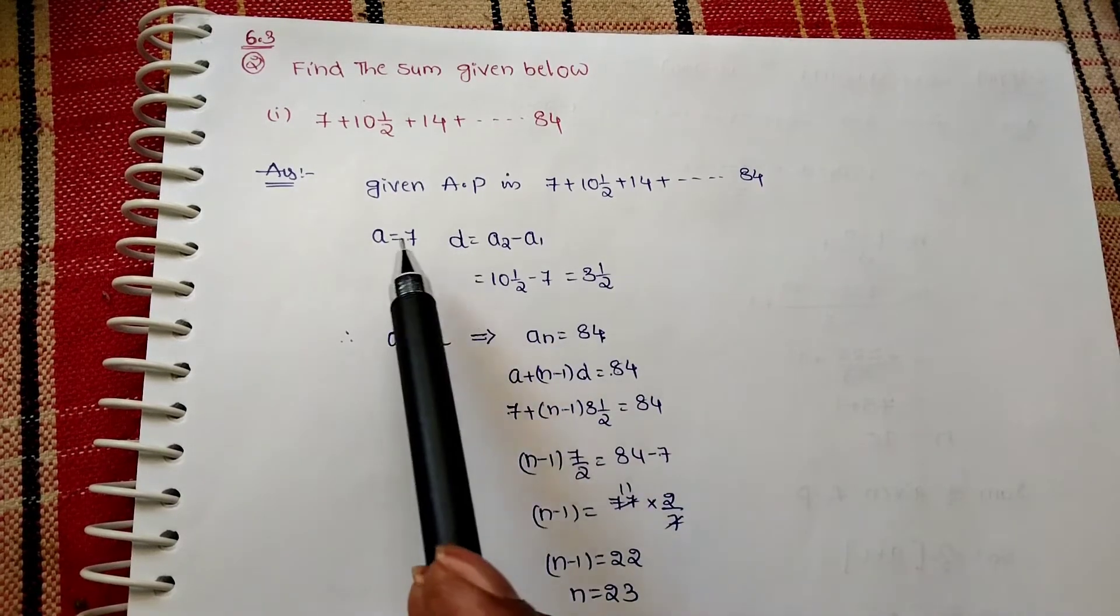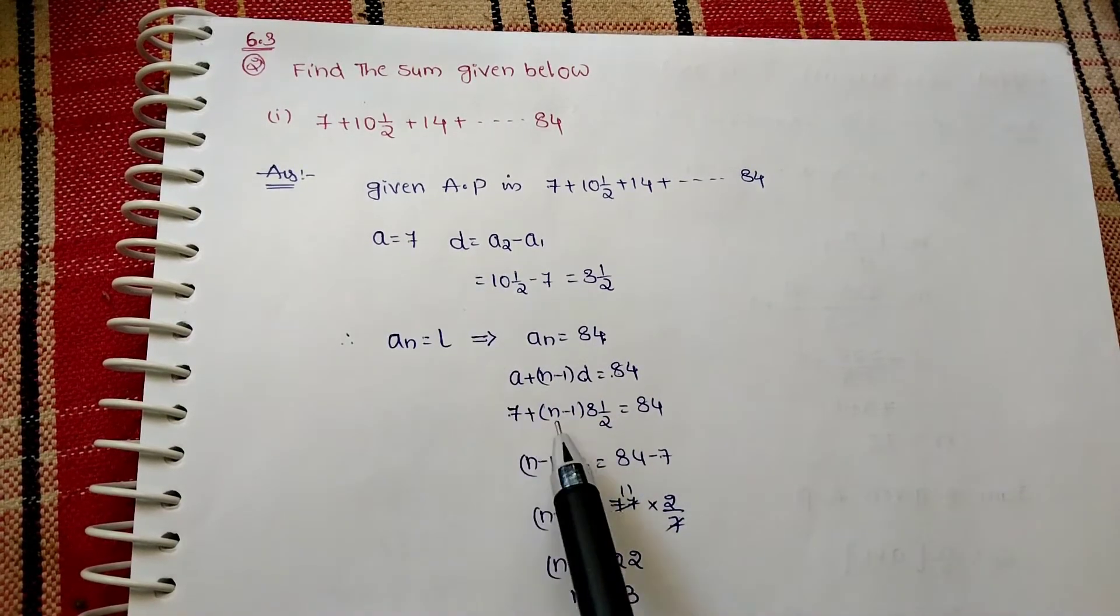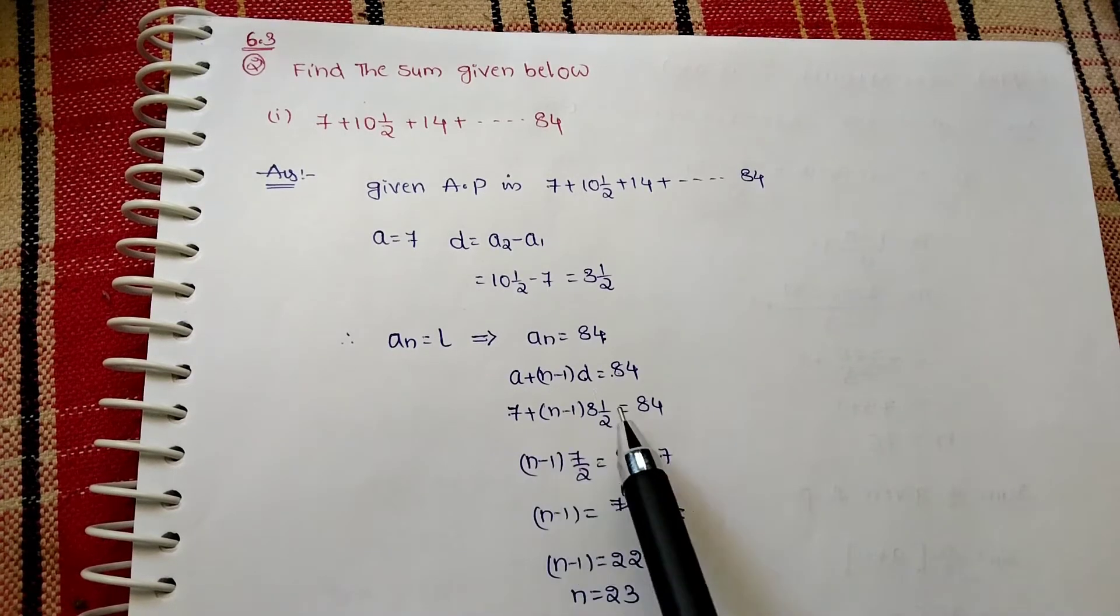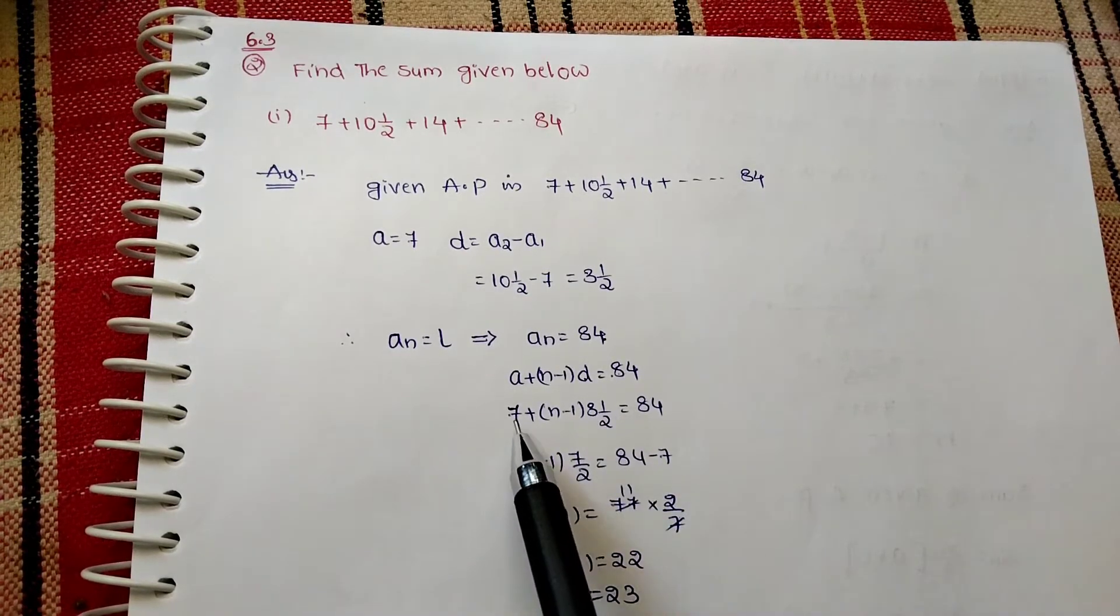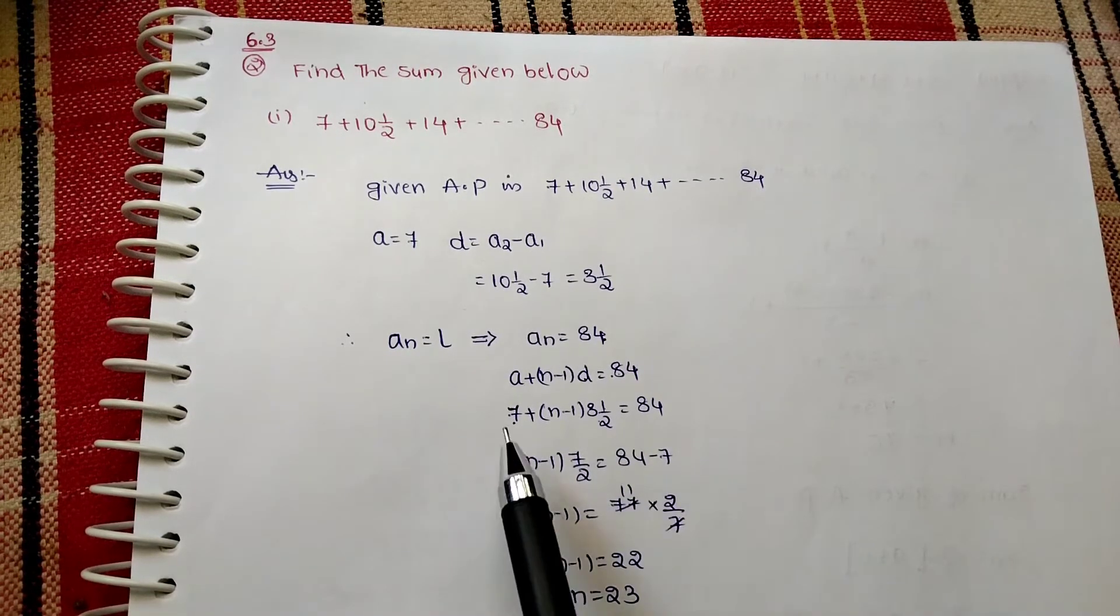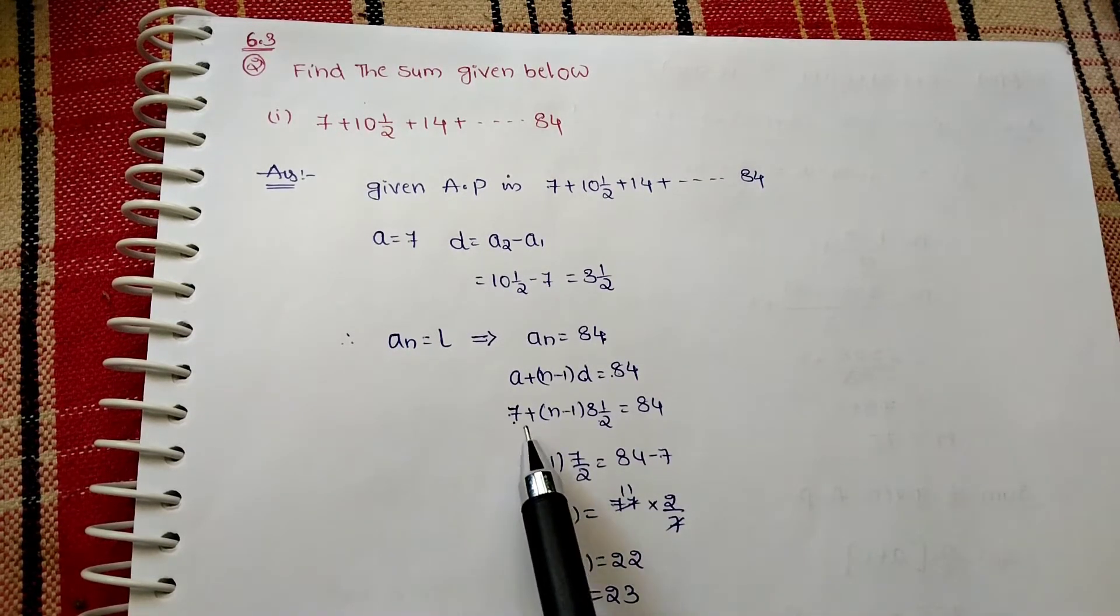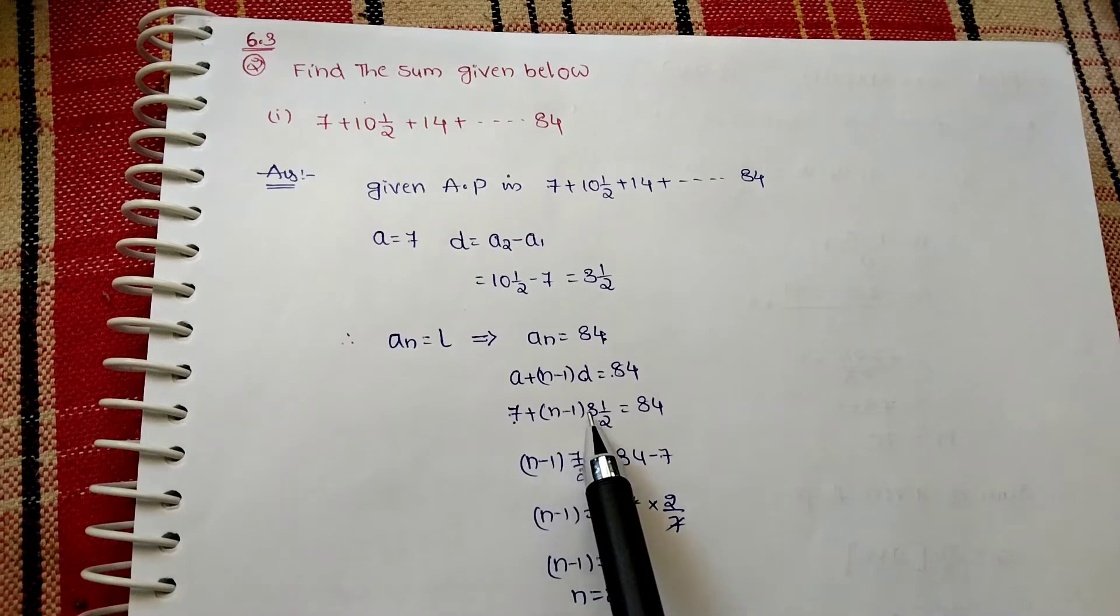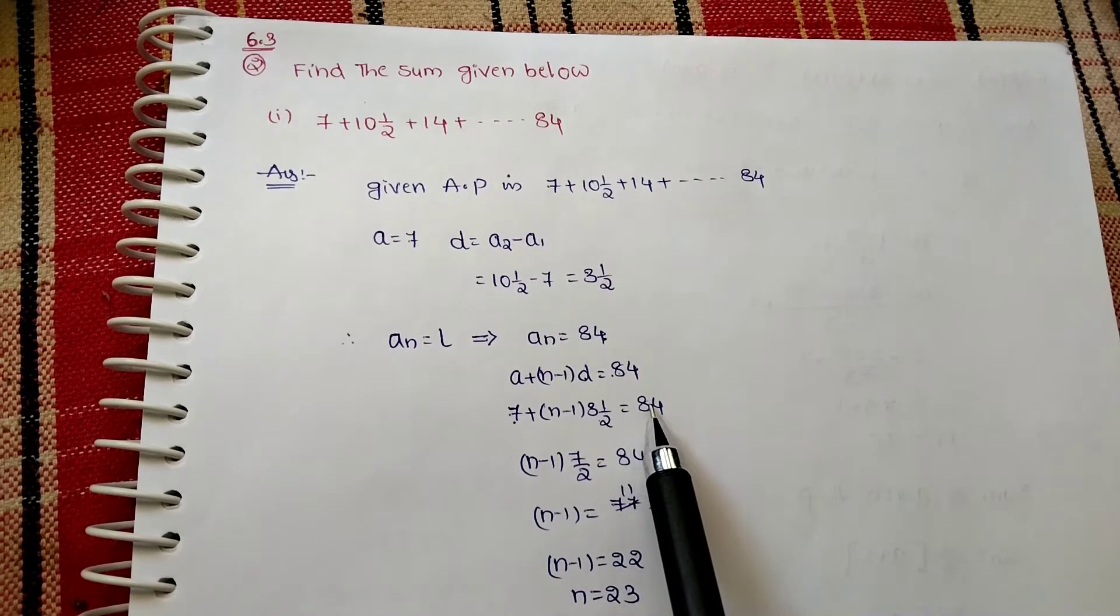We know that a equals 7. I am substituting a and d in this equation. a equals 7 and d equals 3 and 1/2. From that, a plus n minus 1 and 3 and 1/2 equals 84.